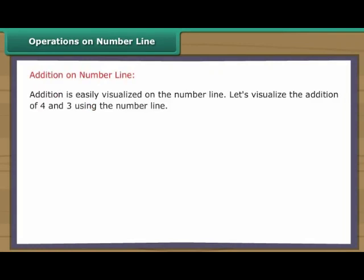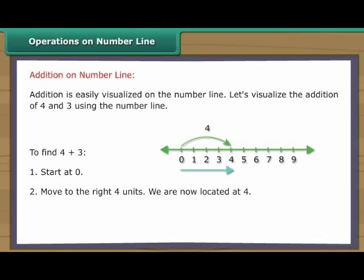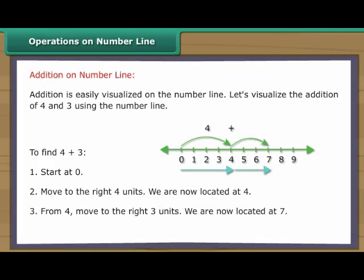Operations on number line. Addition is easily visualized on the number line. Let's visualize the addition of four and three using the number line. To find four plus three, start at zero. Move to the right four units. We are now located at four. From four, move to the right three units. We are now located at seven. Thus, four plus three is equal to seven.